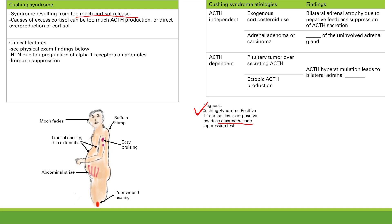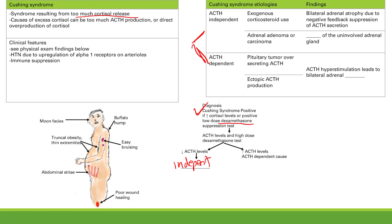Once Cushing syndrome is diagnosed, you check ACTH levels and do a high-dose dexamethasone test to differentiate the etiologies. If ACTH is low, it's ACTH-independent — either exogenous corticosteroid use or an adrenal gland problem. If ACTH is elevated, you use the high-dose dexamethasone test to differentiate between pituitary and ectopic sources.